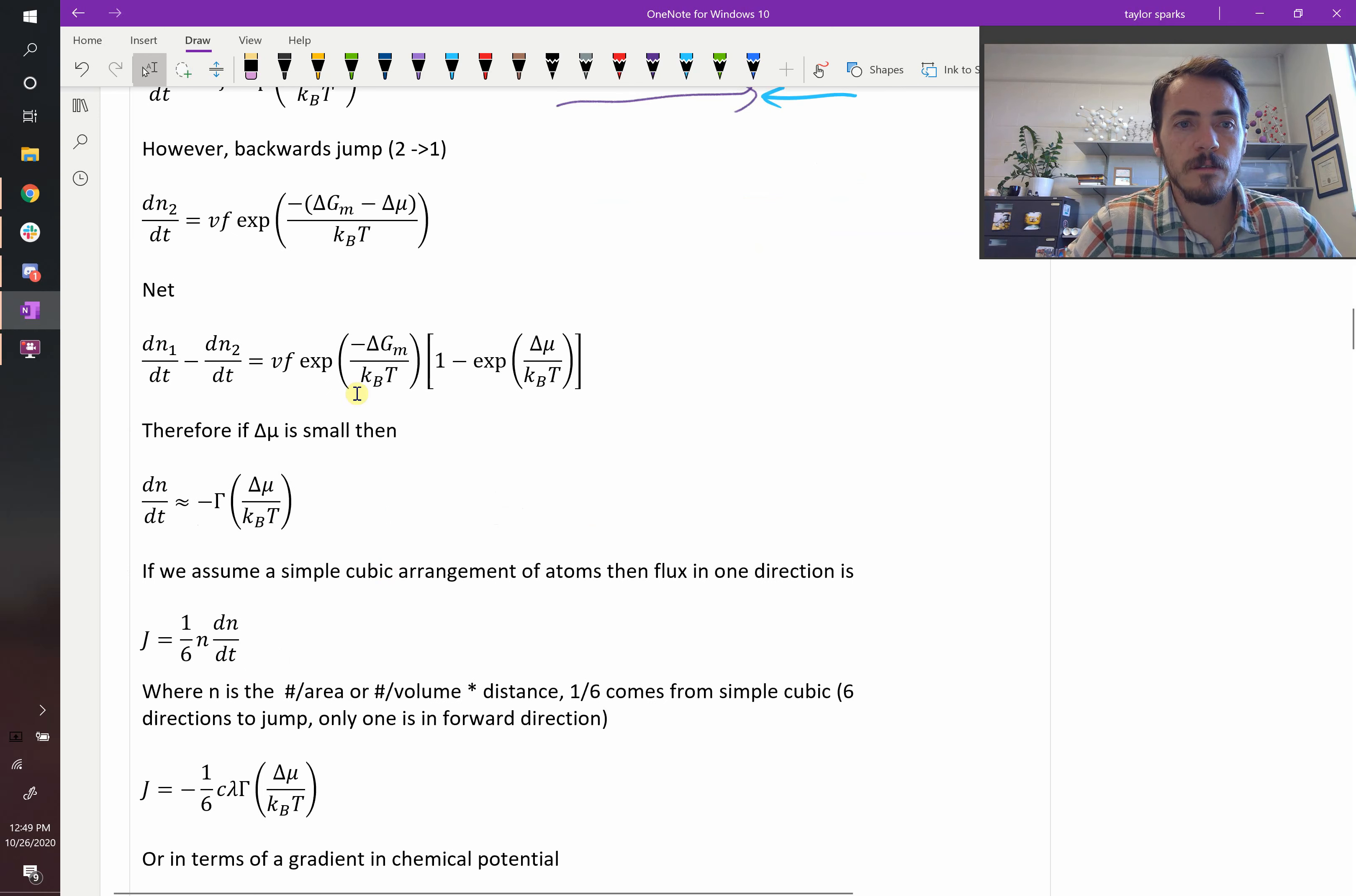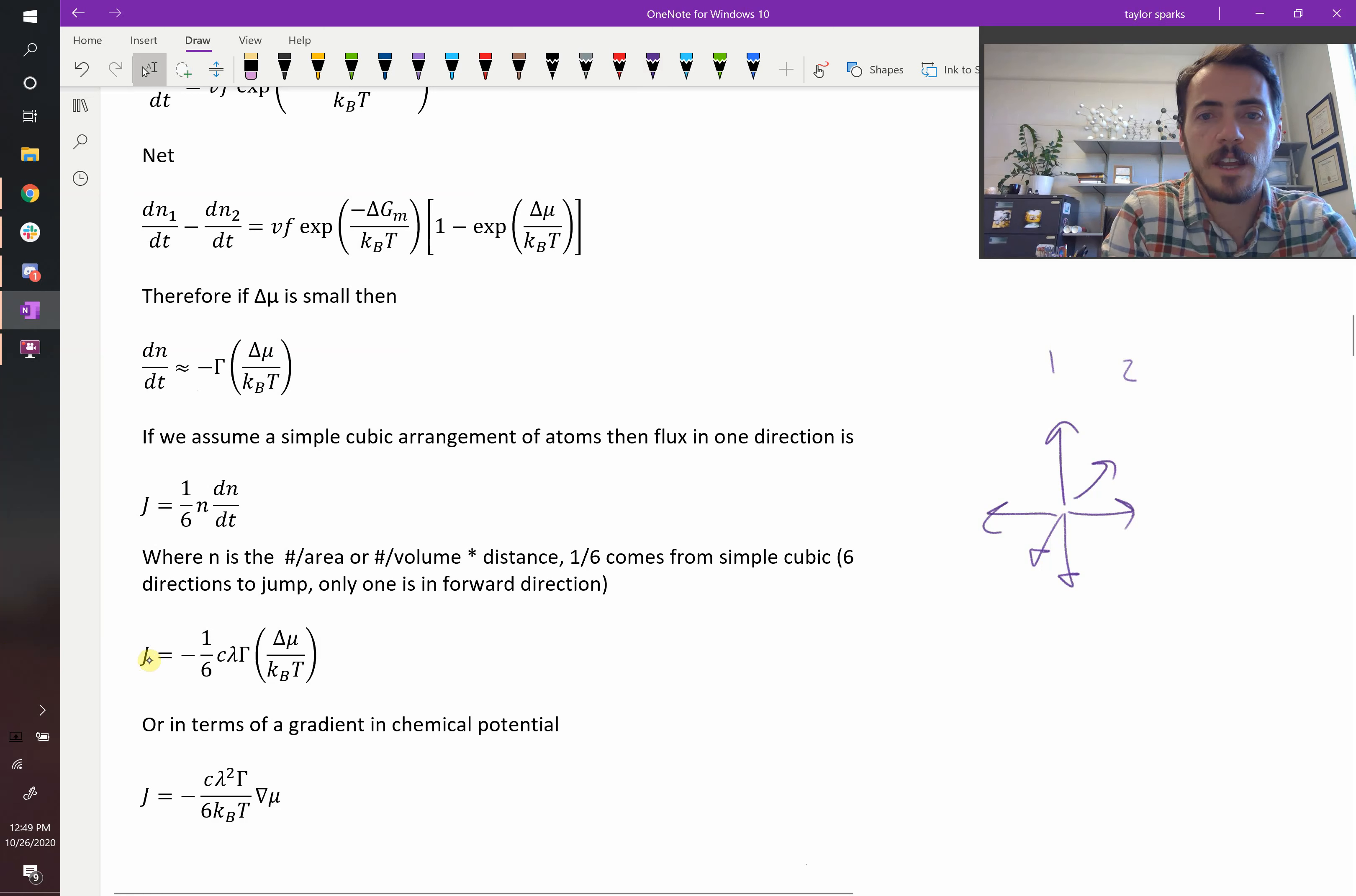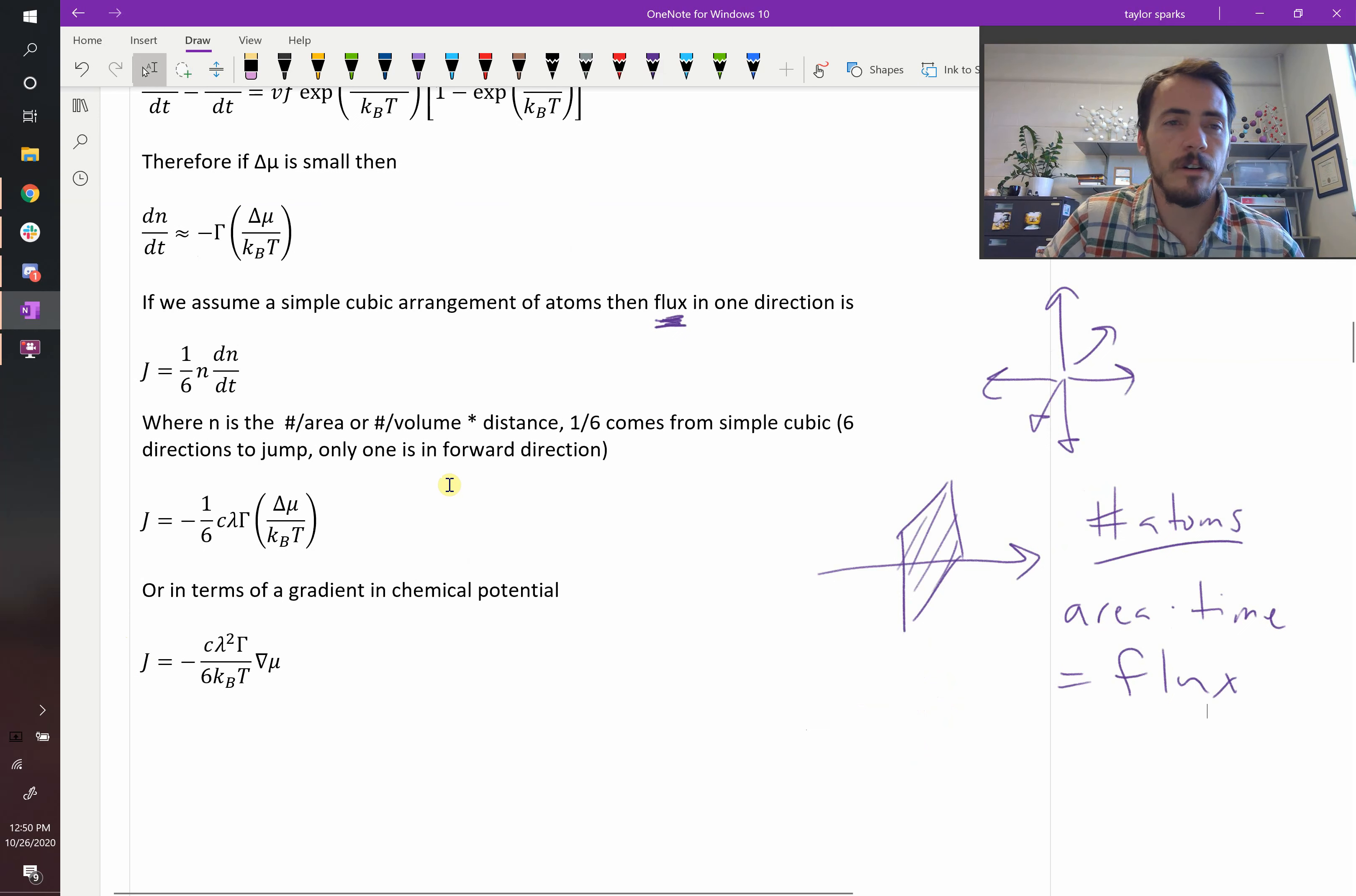If you were then to start plugging things in based off of v and f, we could say, well, if it's a cubic arrangement where it can hop six different directions, but only one of them is the one that we're interested in here going from position one to position two, then it would be one sixth, assuming that it vibrates in an isotropic manner in all different directions. So you could get mathematical about this and actually calculate the flux. J is now our flux. A flux is the number of atoms per area per time that's going to be moving. For some unit area, if you imagine like a net that these things are passing through, you're looking at the number of atoms per area per time. That would be equal to our flux.